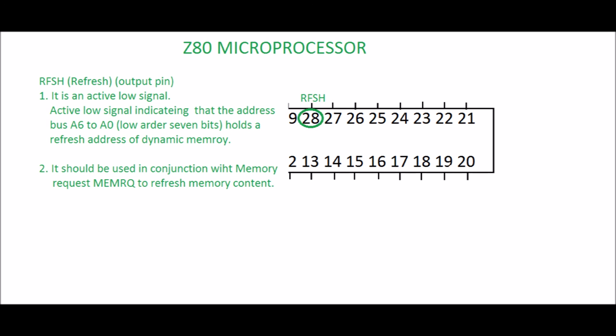Pin 28: RFSH, Refresh. It is an output pin and an active low signal. Active low indicates that the address bus A6 to A0 (low order 7 bits) holds a refresh address of dynamic memory. It should be used in conjunction with memory request (MREQ) to refresh memory content.